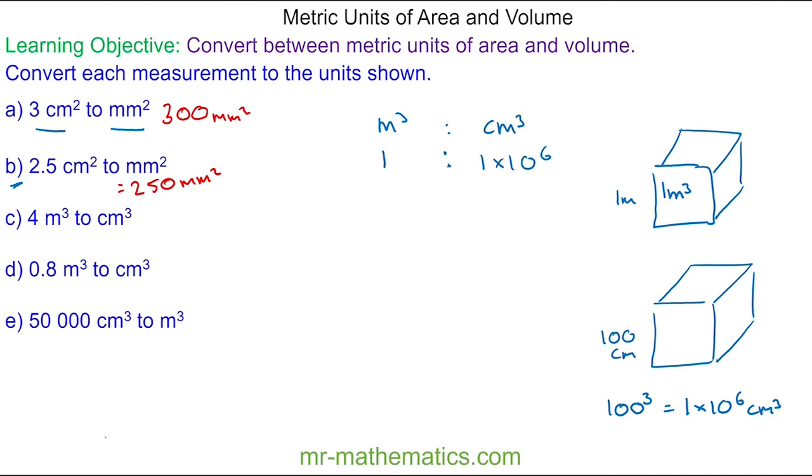For question C, we can convert four metres cubed by multiplying the left-hand side by four and the right-hand side by four. So we get four metres cubed is four times ten to the sixth centimetres cubed.